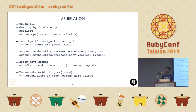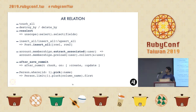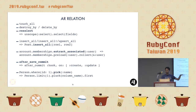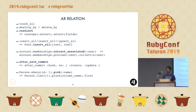Lots of improvements have been done on Active Record relation. touch_all has been added — you can call it on a collection and it will touch all the objects. destroy_by and delete_by have been added as simpler ways to conditionally destroy or delete objects. reselect has been added — it unscopes the select and then selects the fields again. This is useful for scope chaining when you don't know what the previous select is; similar to reorder. You can use reselect so that everything before is dropped and only the newer fields are selected.